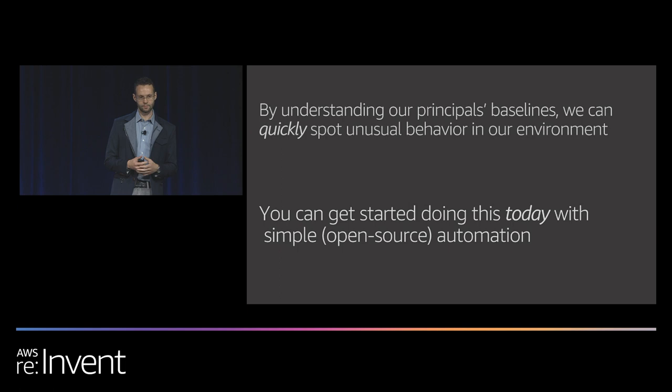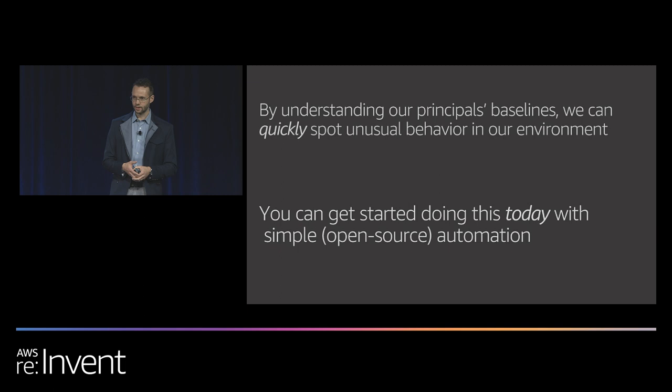We're not here today to discuss human anomaly detection. We want to get really good at figuring out when something's wrong with our applications. The good news is that we can use this same baseline approach. We can understand what is normal for our applications, and once we get to that state, we can spot unusual behavior — something's off — in the same way the researchers did with the human participants. An application all of a sudden does something it doesn't normally do — that's unusual, and we can do something about that.